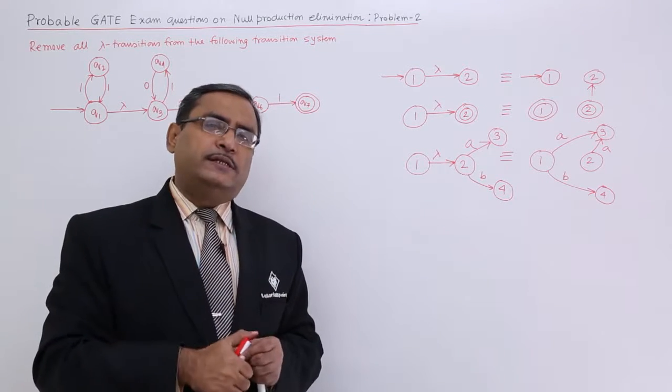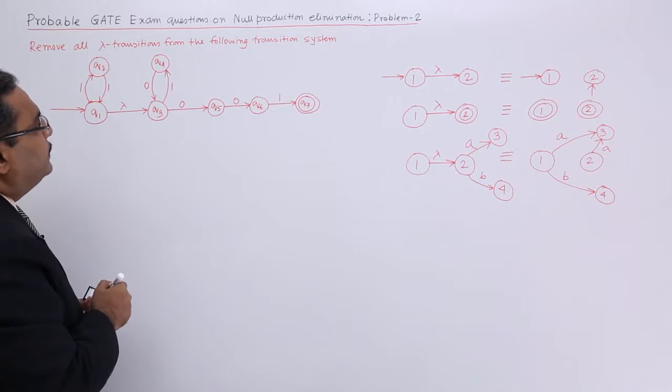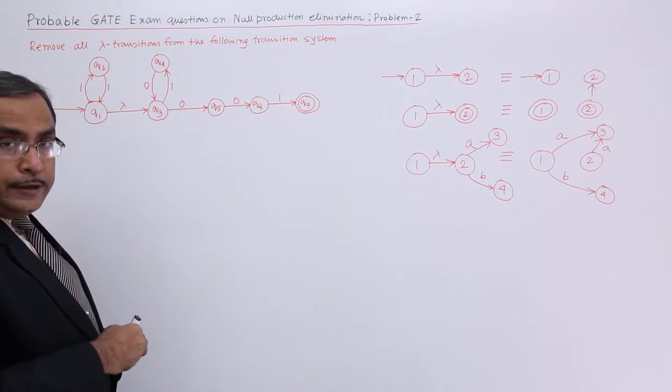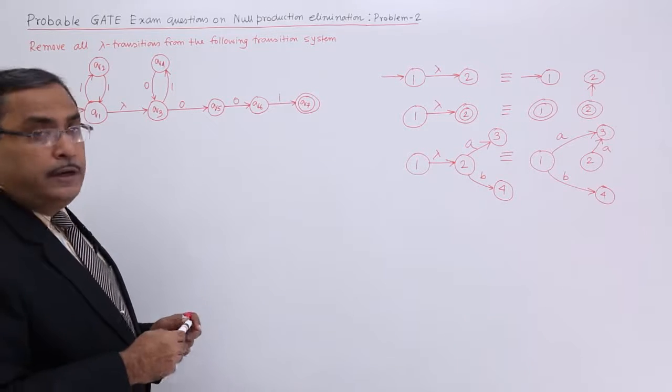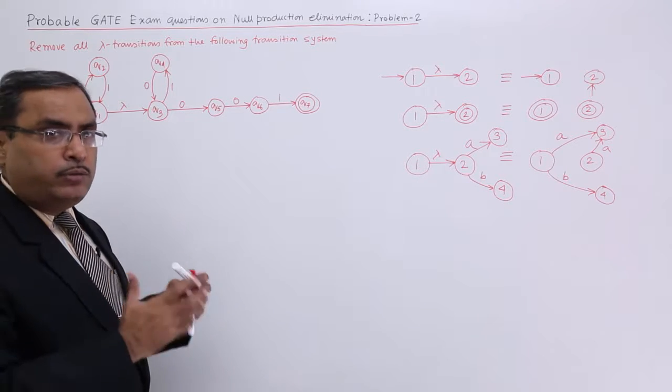Now let me apply this concept for this particular solution. Here we are having only one lambda transition, so it has to be eliminated. Now let me draw the remaining part of the transition system without lambda transition.